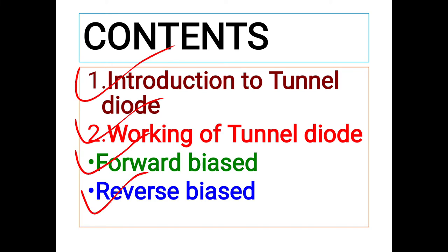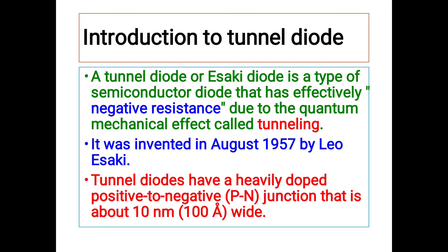Tunnel diode is also known as Esaki diode. A tunnel diode is a type of semiconductor diode that has effectively negative resistance due to the quantum mechanical effect known as tunneling. The tunnel diode was invented by Esaki in August 1957, and after his name it was also named as Esaki diode.